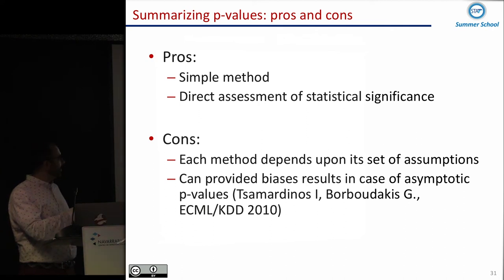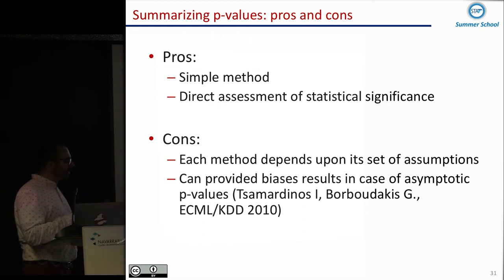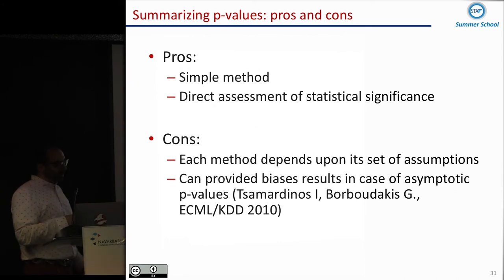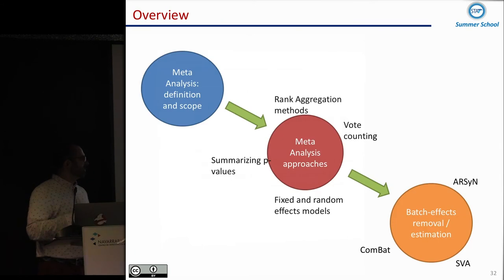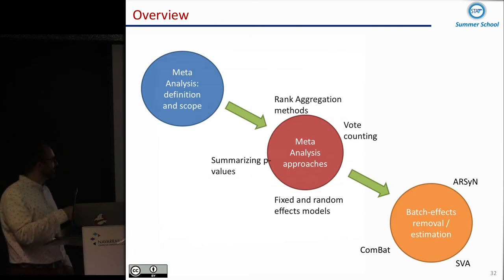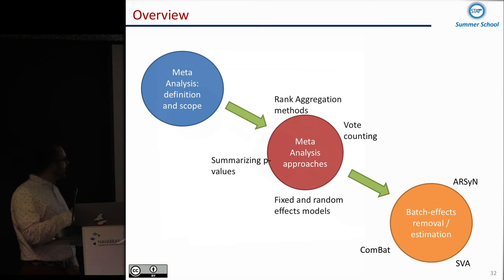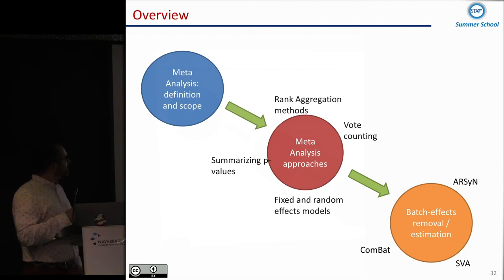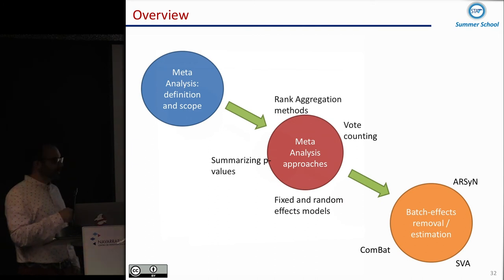These combination methods use p-values and give directly another combined p-value as a summary statistic. Unfortunately, each combination method depends on some assumptions, and p-value-based combination can produce very biased results in some cases — this is worth being aware of. The first two methods we discussed are pretty much non-parametric and can be used more broadly; the other two — fixed and random effect models — have more parametric assumptions, so you have to be careful.